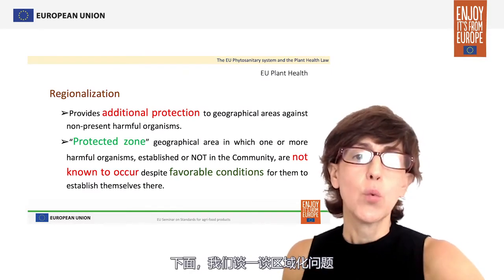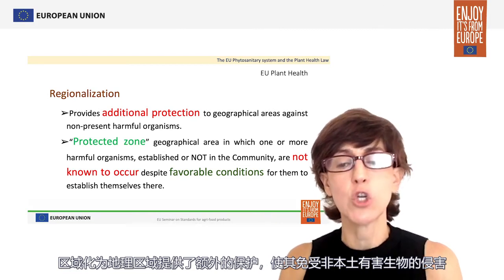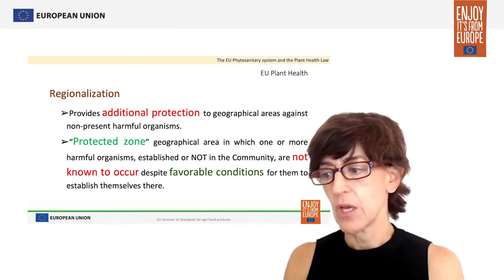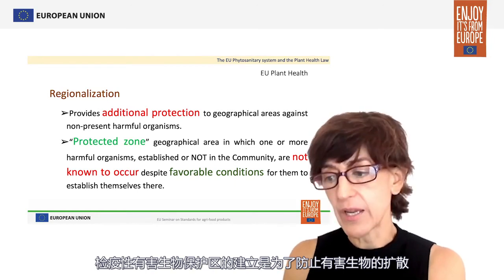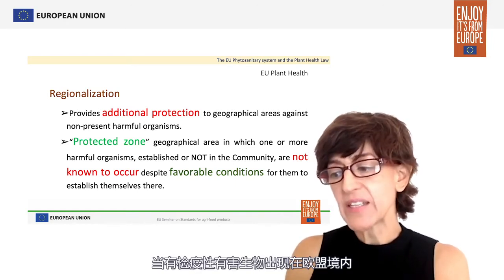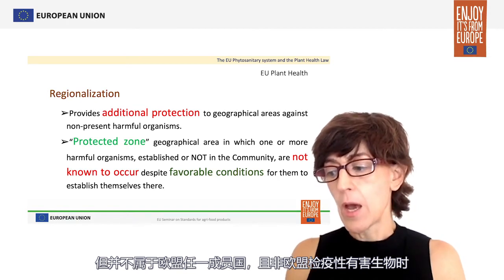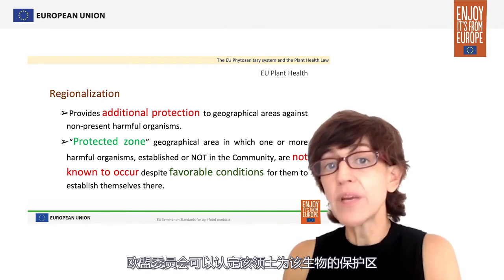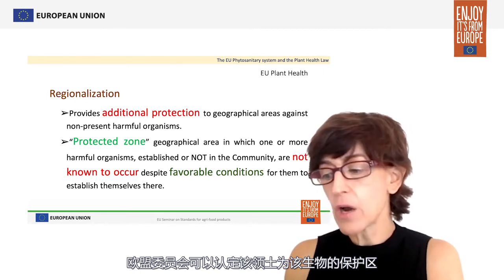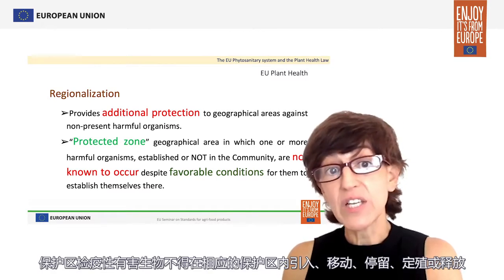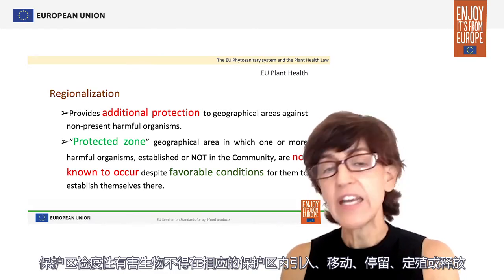Moving on, we can talk about regionalization. Regionalization provides additional protection to geographical areas against non-present harmful organisms. Protected zone quarantine pests are established with the aim to prevent the spread of harmful organisms. When a quarantine pest is present in the Union territory but not present in a member state of the EU, and it is not a Union quarantine pest, then the European Commission may recognize such territory as a protected zone in regard to that quarantine pest. A protected zone quarantine pest shall not be introduced, moved within, held, multiplied, or released in the respective protected zone.